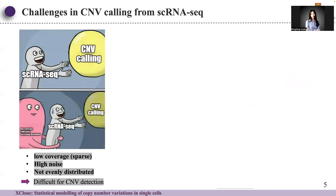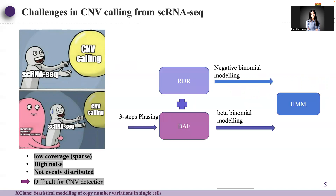However, single-cell RNA sequencing data sparsity results in the same sparsity property in both read count and B allele information. So we apply negative binomial modeling on the read count and beta-binomial modeling on the B allele frequency, then integrate both sources of information into an HMM framework for copy number variation state calling.